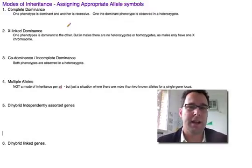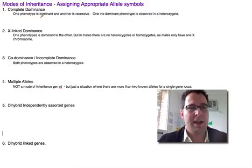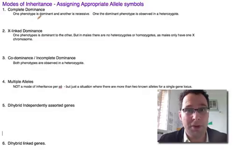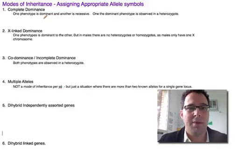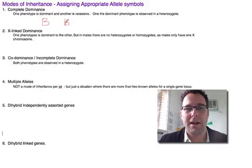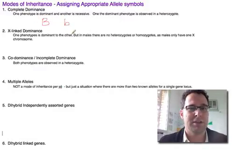In this lesson I want to explain the most appropriate allele symbols to use depending on the mode of inheritance. We'll start with complete dominance. For the dominant trait — the trait expressed in the phenotype of a heterozygote — we use a capital letter that somehow represents the trait. For the recessive trait we use a lowercase letter of the same letter, so big B and little b, or big H and little h. That's the convention.